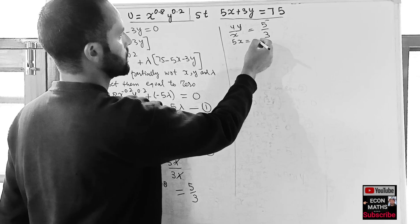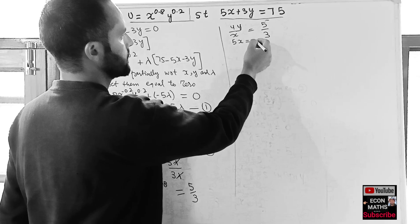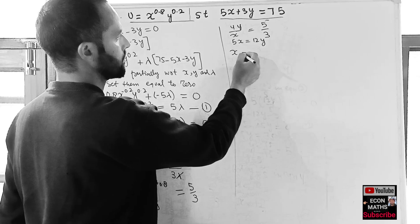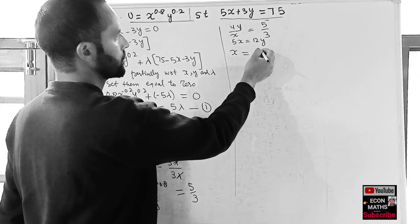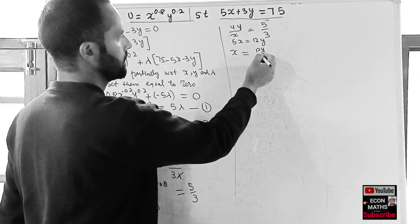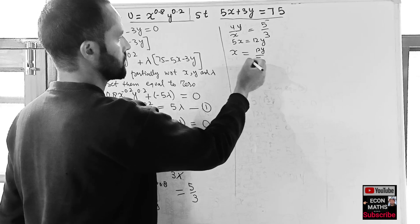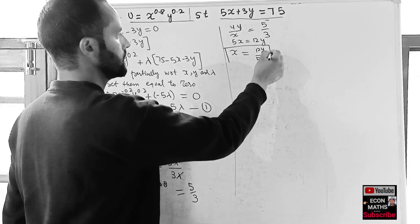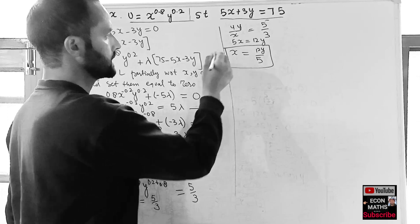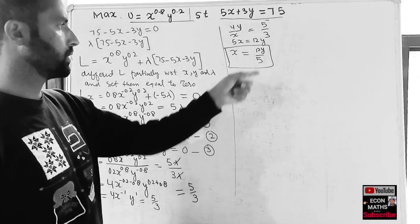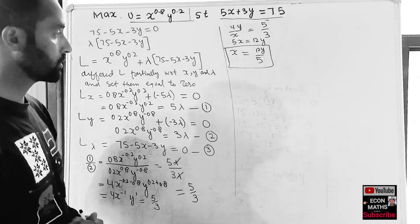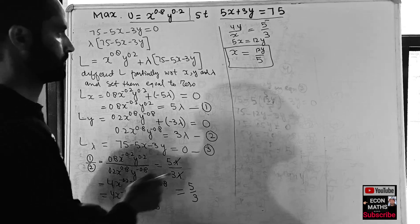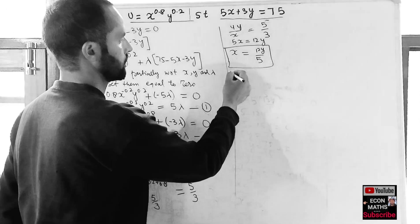Solving for x: cross-multiplying gives 5x = 12y, therefore x = 12y/5. Let this be Equation 4. We will now substitute this into Equation 3.